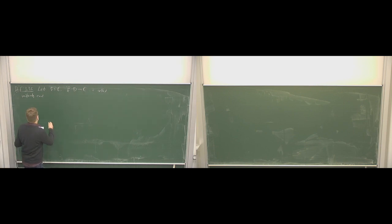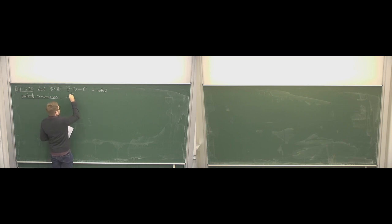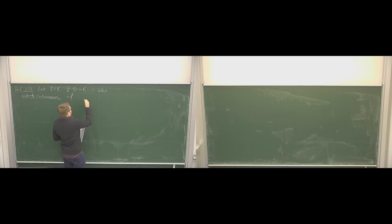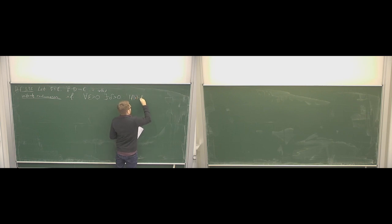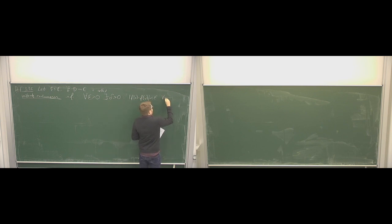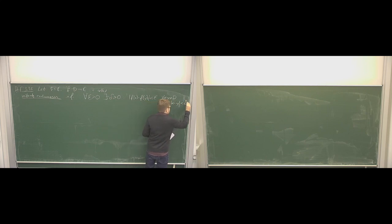At least he started correct. So, this is uniformly continuous — uniformly continuous, if the following holds. And it's again an epsilon-delta definition. For all epsilon bigger than 0, there exists delta bigger than 0, such that the following holds: the absolute value of f(x) minus f(y) is smaller than epsilon, for all x, y in D with the absolute value of x minus y smaller than delta.